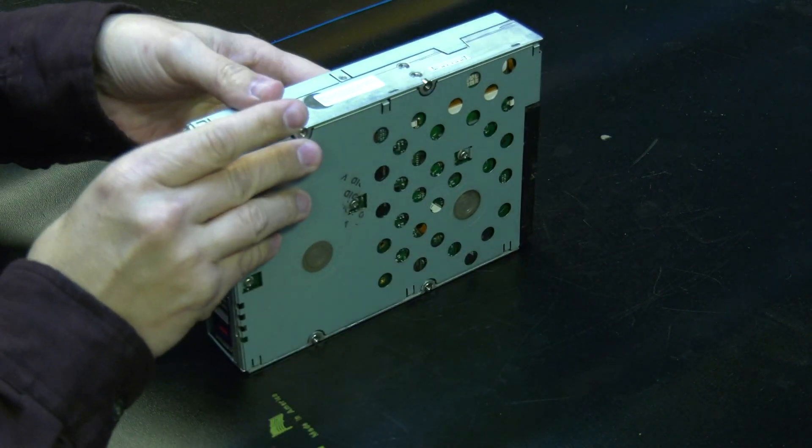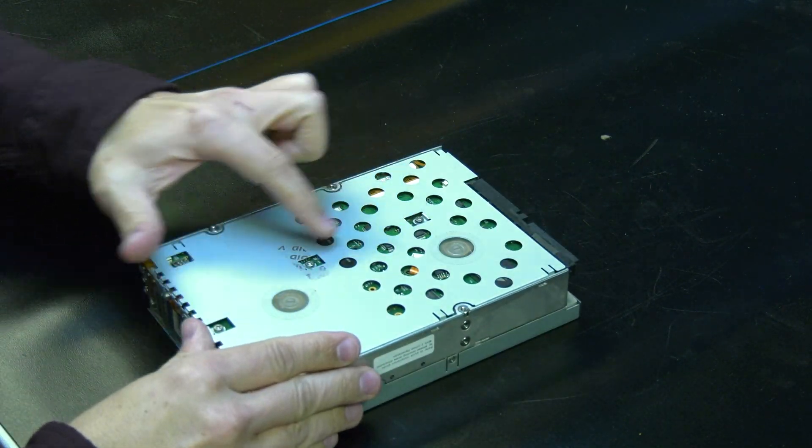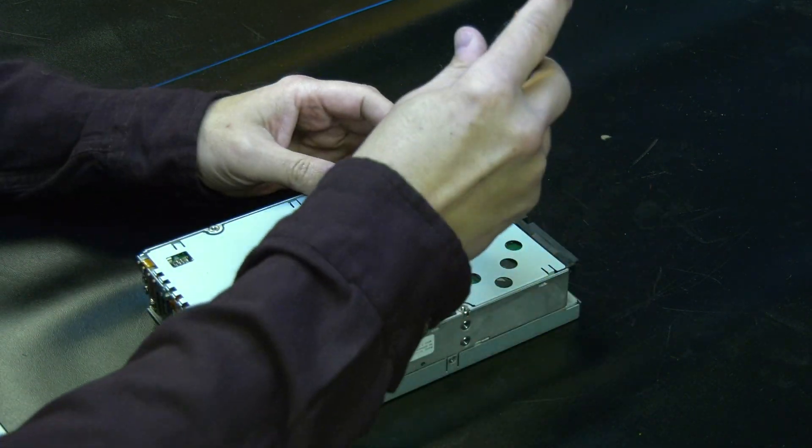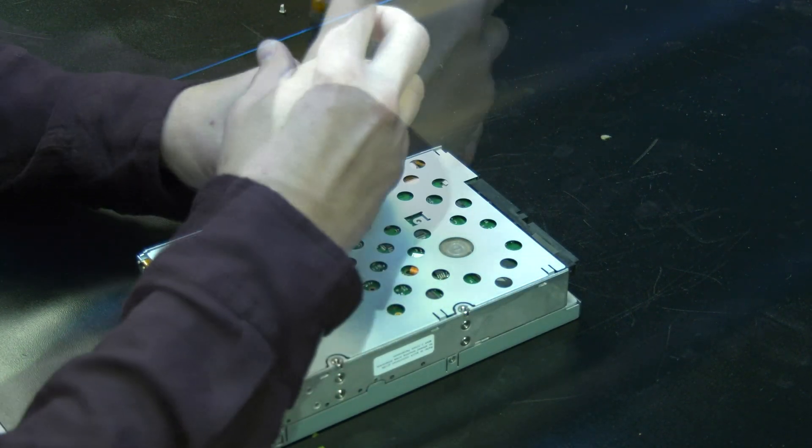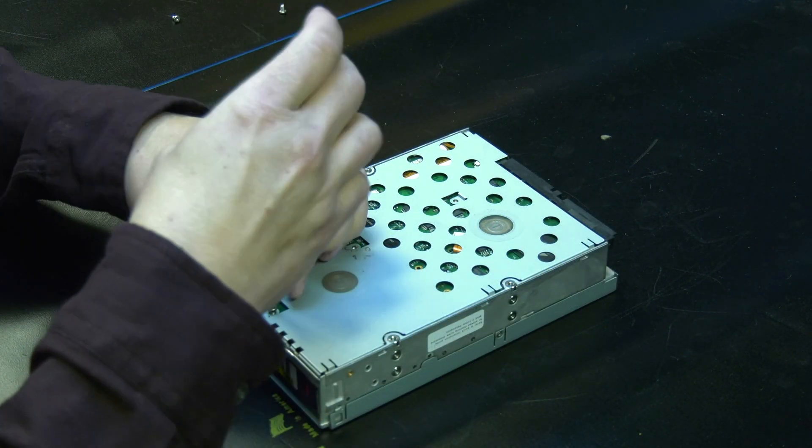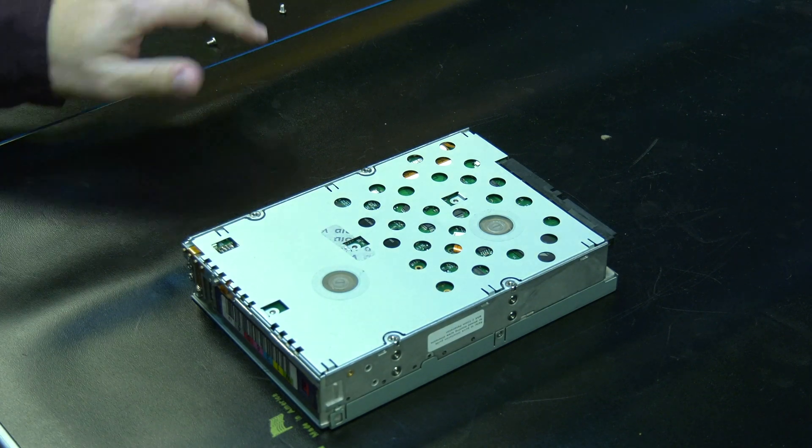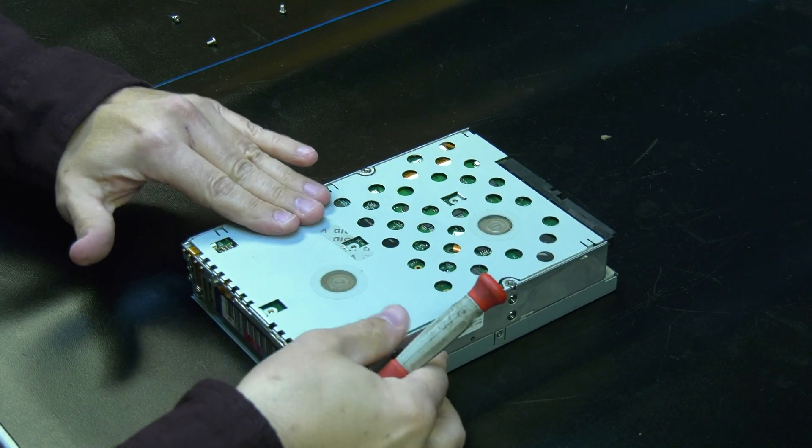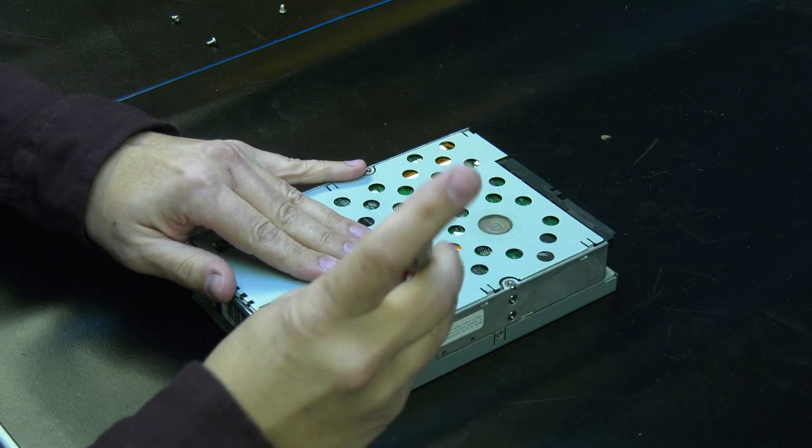Then you will need to flip the drive over and remove the bottom cover. First, there are three screws you will need to remove with a Phillips screwdriver. Once the screws are removed, you can then use a thin flat head screwdriver to pop the edge of the bottom cover up. Then you can carefully remove the bottom cover from the drive.